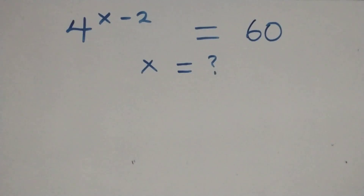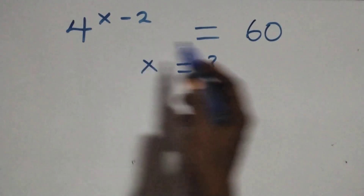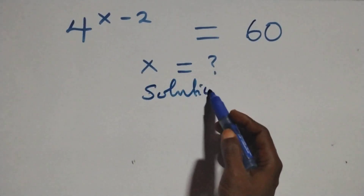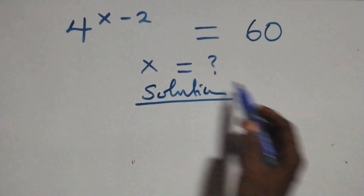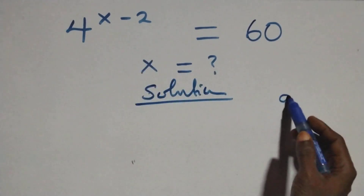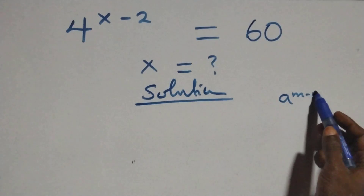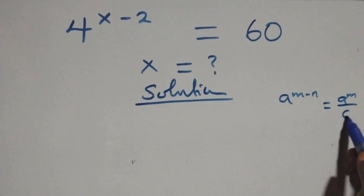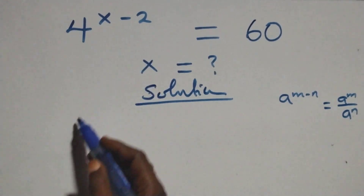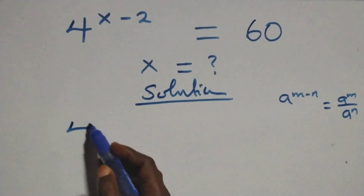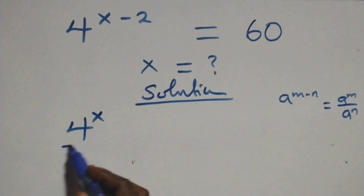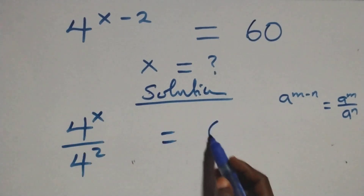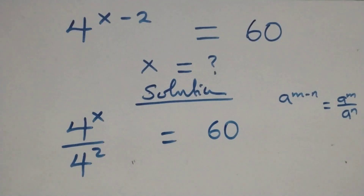Hello, you're welcome. Here we solve this exponential equation. This follows from the law where a raised to power (n minus n) can be written as a raised to power n over a raised to power n. Here this becomes four raised to power x over four squared, equals sixty on this side.